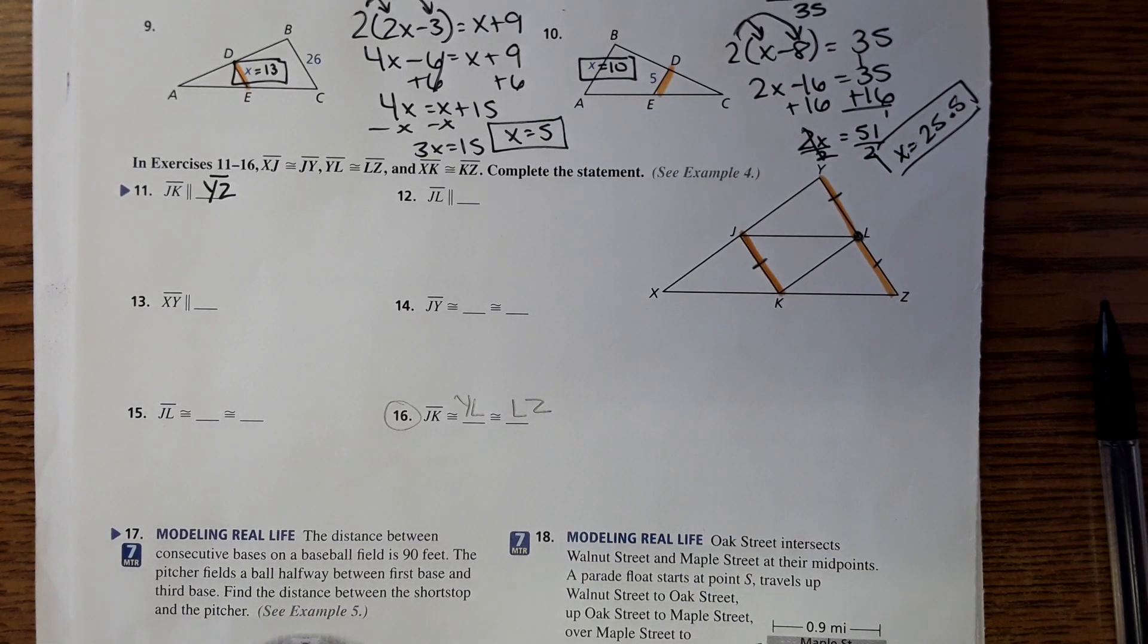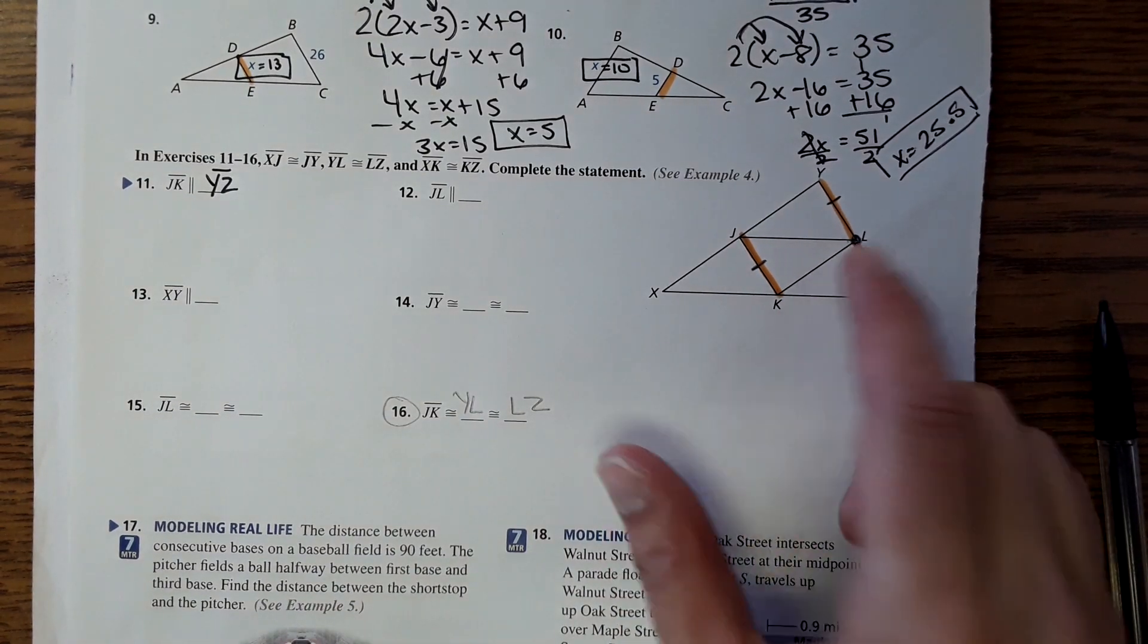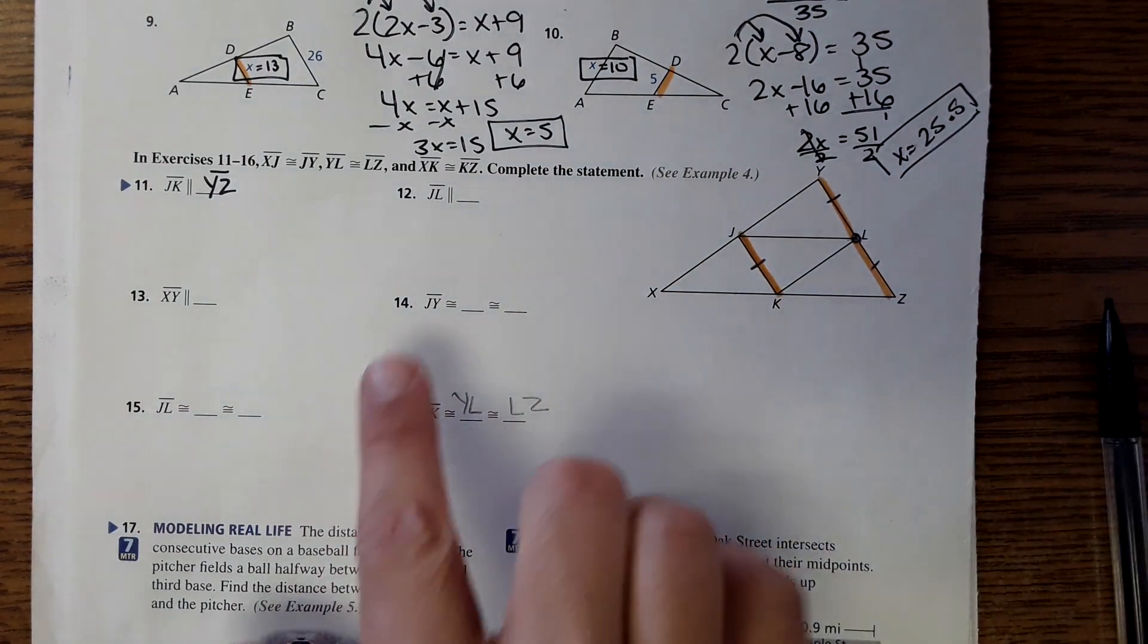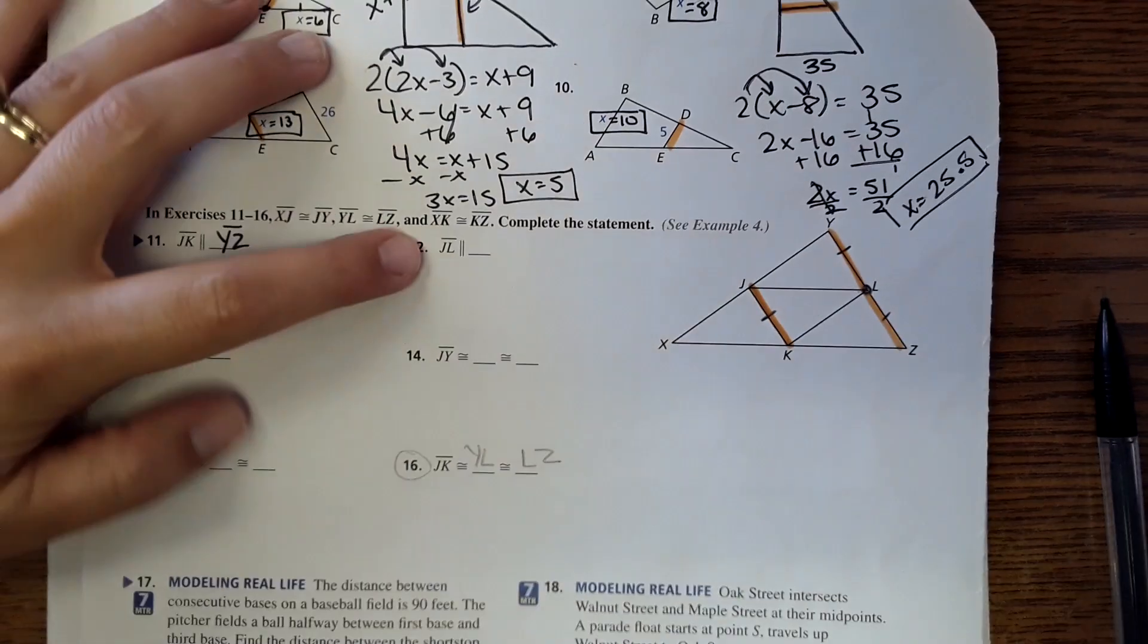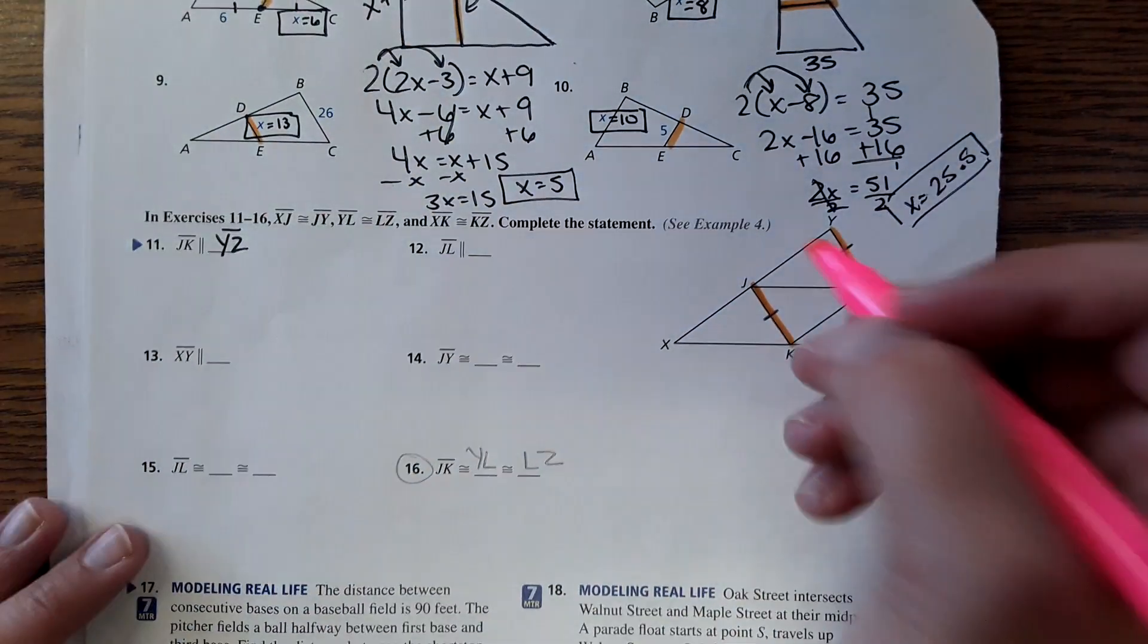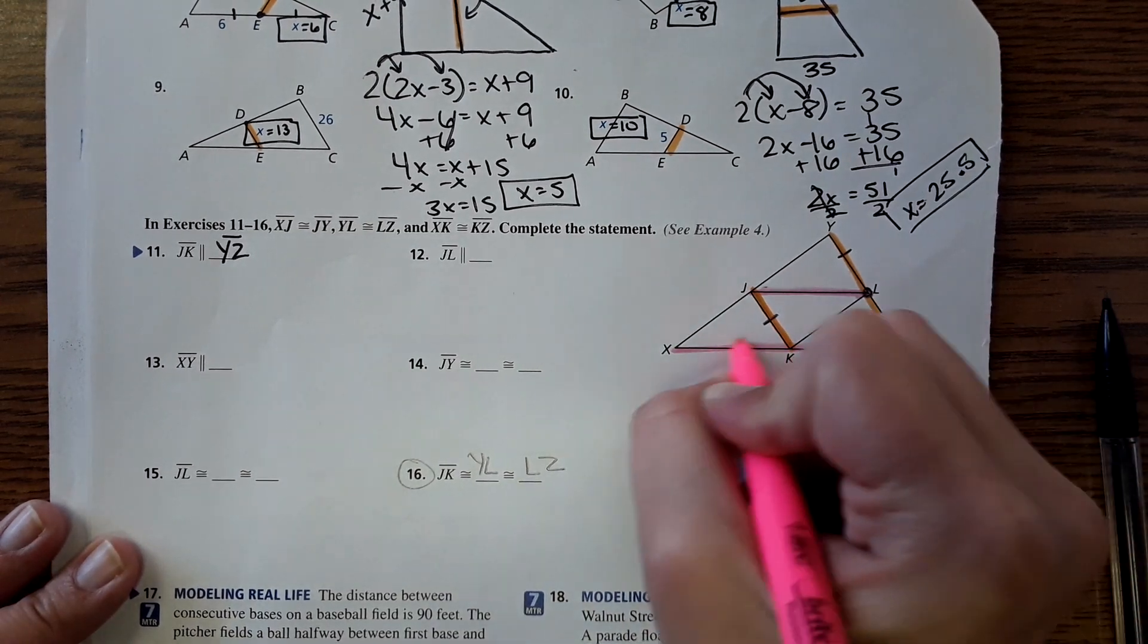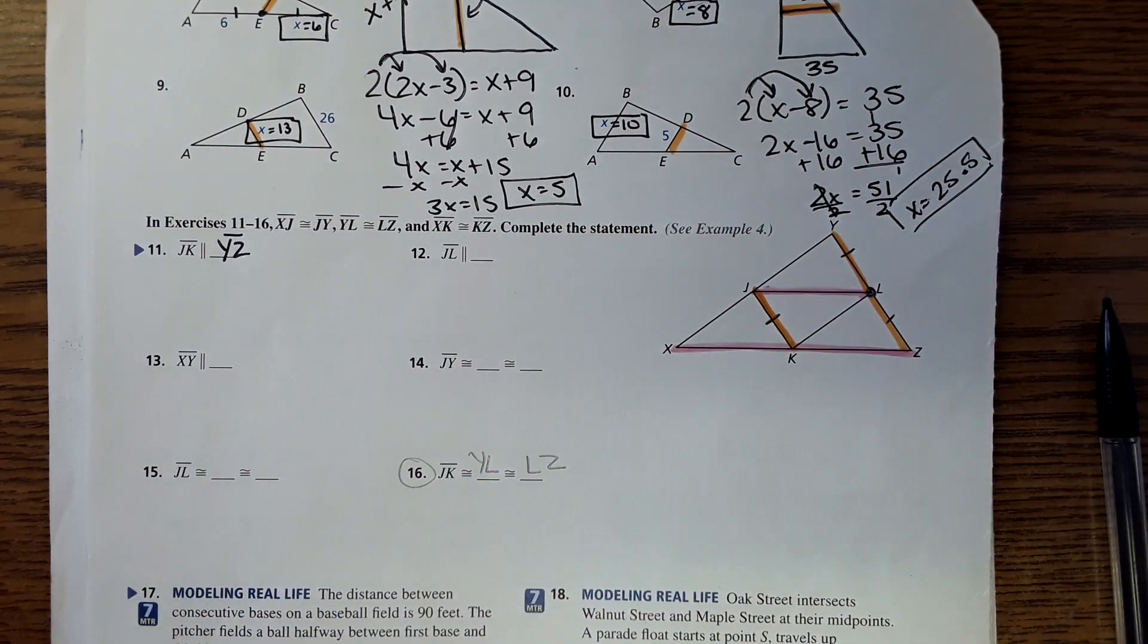Does that make sense? So since this is half of the length of this and then this is the midpoint, then it's all the same. Okay, so going back up to number 12, it wants to know what's parallel to JL. JL is right here and what's parallel to that is right here, so XZ.